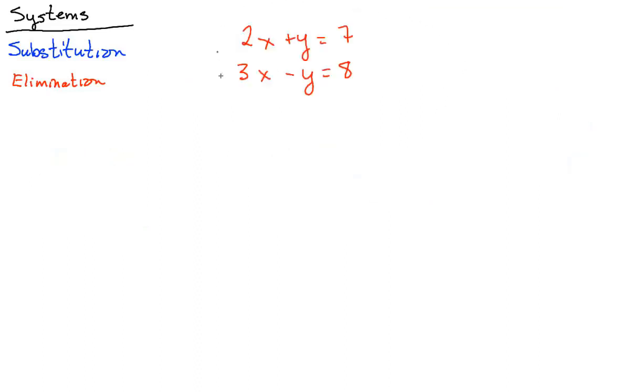So let's do elimination. Now, if you look at this one, you could do this by substitution. You could subtract 2x from both sides, so you get y equals 7 minus 2x and then stick it right in there. Of course you could do that.